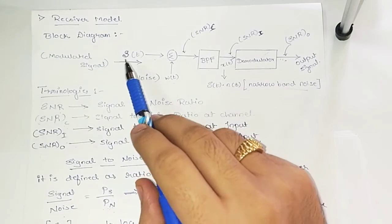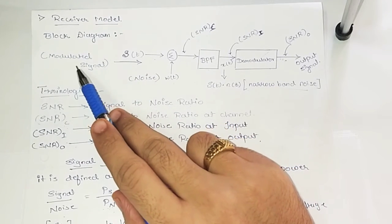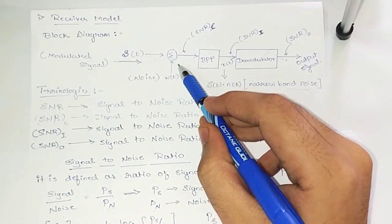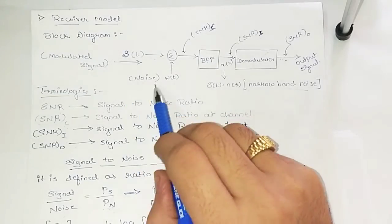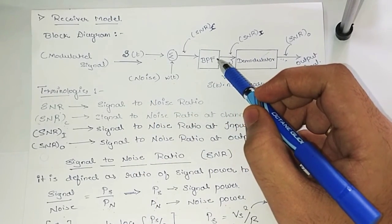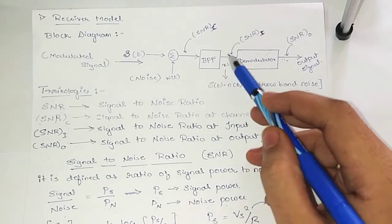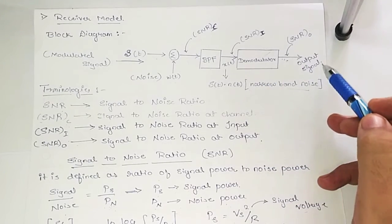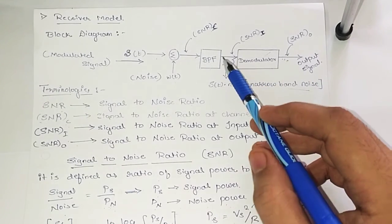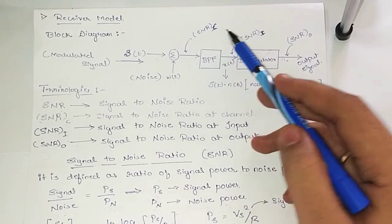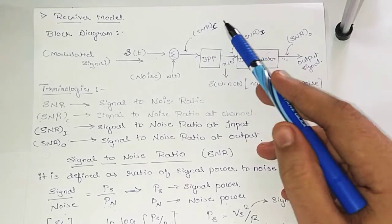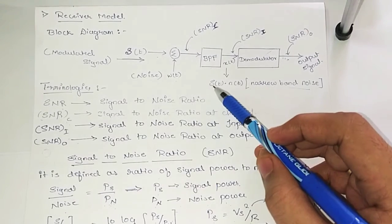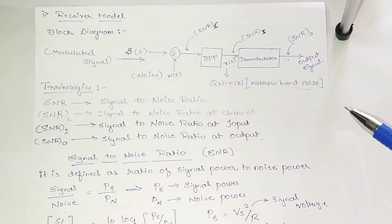In this block diagram, we have S(t), which is nothing but a modulated signal — a signal which passed from the communication channel. We have a summer and W(t), which is noise. We have a BPF — band pass filter. The output of this band pass filter is fed to the demodulator, and from the demodulator we get the output signal. We also write X(t), which is S(t) into N(t) — it is a narrow band noise.